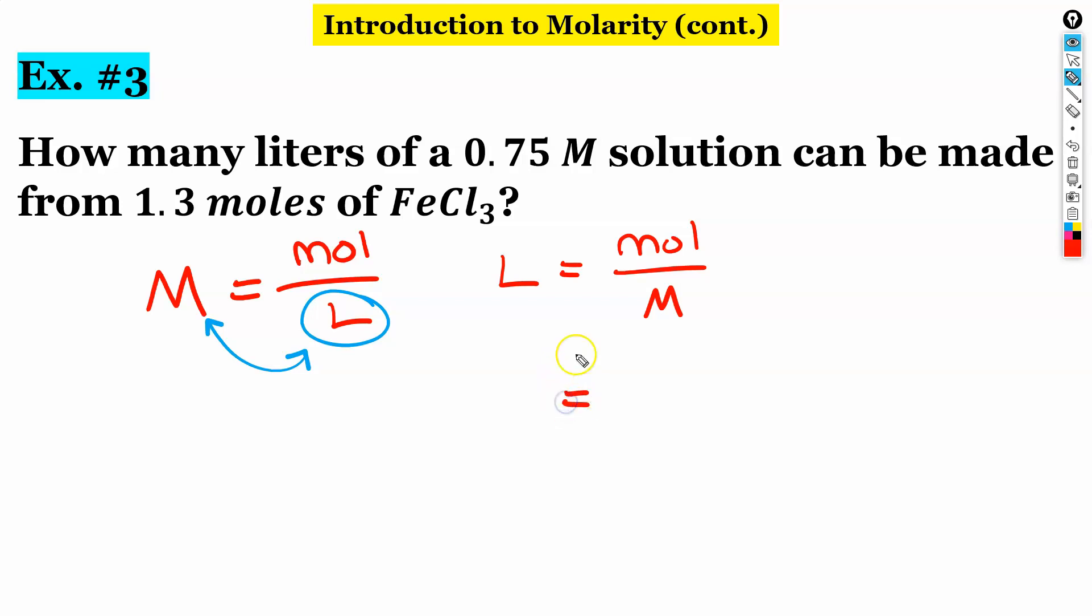So plugging in 1.3 moles over my molarity of 0.75. We're going to get 1.7333. Two sig figs, two sig figs. We're going to round our final answer to two sig figs. So this would be 1.7 liters. All right, that's how to work with molarity.